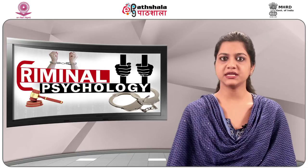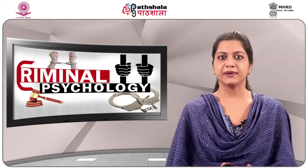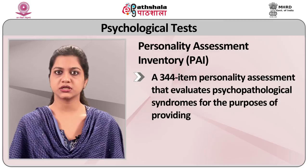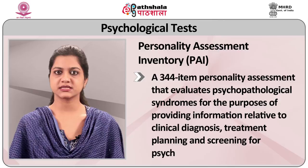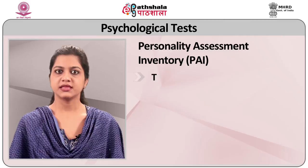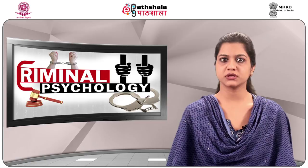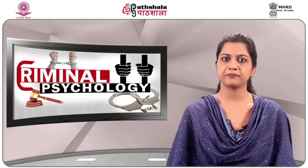PAI: Personality Assessment Inventory is a 344-item personality assessment that evaluates psychopathological syndromes for the purpose of providing information relative to clinical diagnosis, treatment planning and screening for psychopathology. There are 4 validity scales, 11 clinical scales, 5 treatment scales and 2 interpersonal scales. This test is appropriate for individuals 18 years and older and requires a 4th grade reading level.